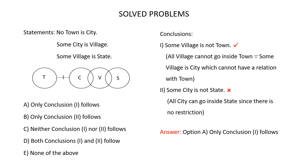In this question, you are given 3 statements and 2 conclusions. To find out which of these conclusions follow, first you have to draw a Venn diagram for these statements. The statements are: No town is city, some city is village, some village is state.